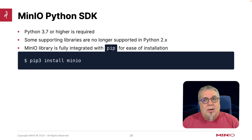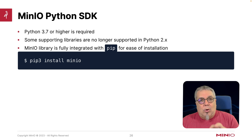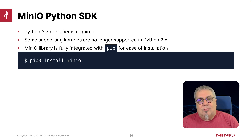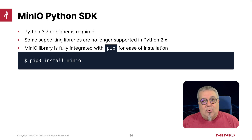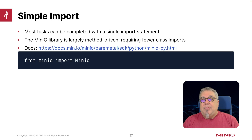The MinIO Python SDK requires Python 3.7. Some of the supporting libraries, most notably the URL lib, which has the certifi lib as part of it, are not supported in 2.x anymore — you have to have 3.7. But it's fully integrated with pip. So I just do a pip3 install minio, and I have the whole MinIO library available at my fingertips.